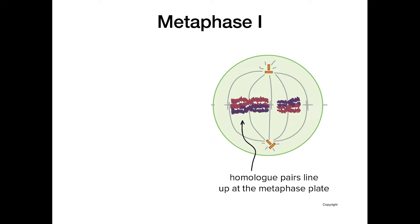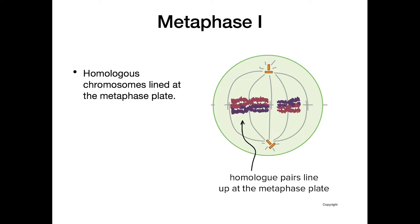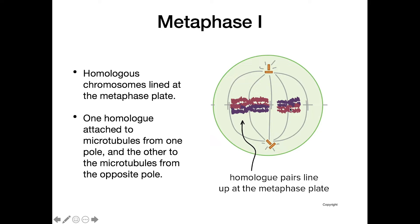Moving on to metaphase 1: we have our homologous chromosomes lined up at the metaphase plate, and we can again see the chiasmata because of crossing over. One homolog attaches to a microtubule from one pole, and the other homolog attaches to a microtubule from the opposite pole, so each homolog is pulled toward a different pole.